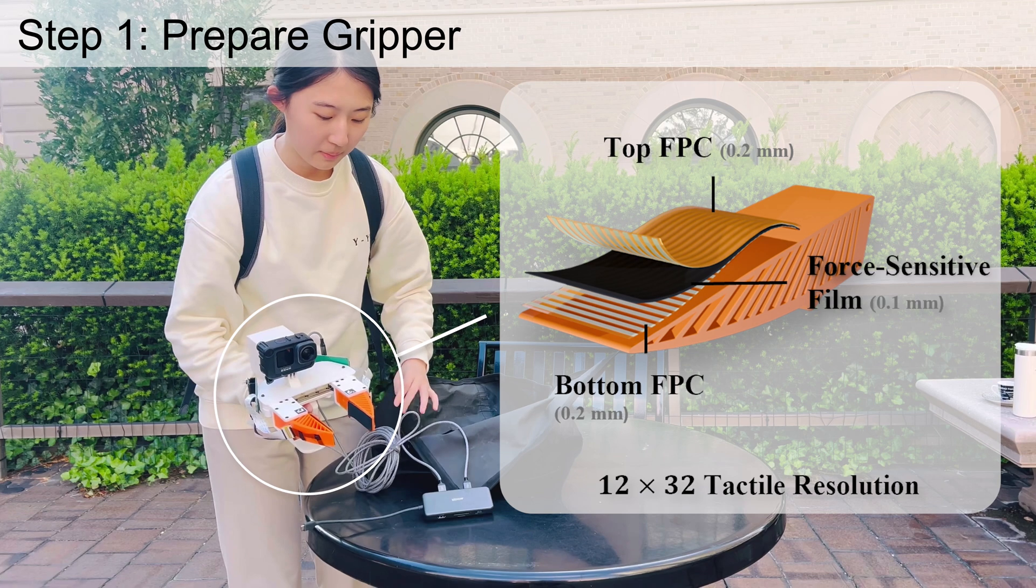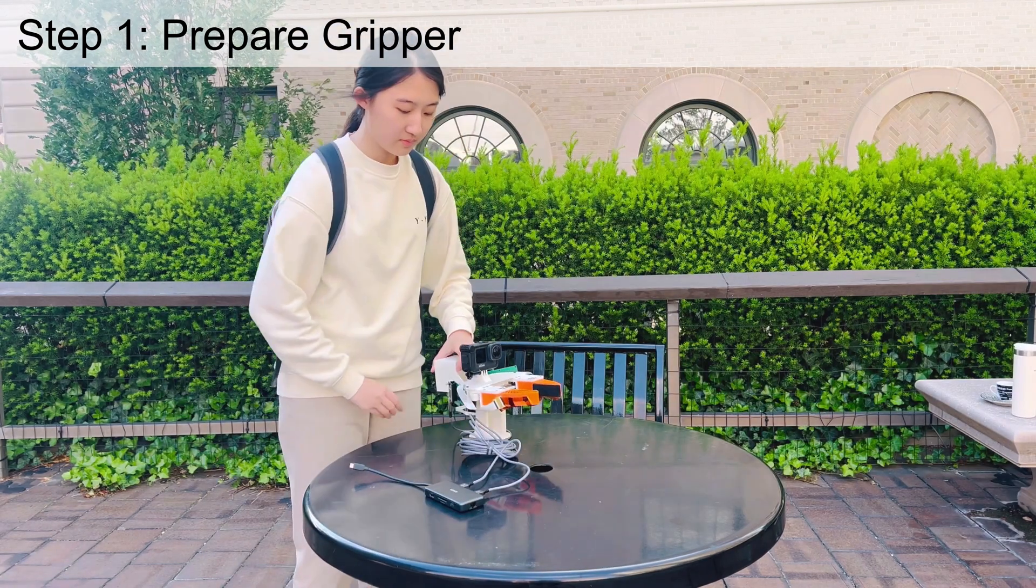A piezo-resistive sensing film is sandwiched between two sets of horizontally aligned conductive yarns acting as electrodes. Each pad offers dense 12 by 32 tactile resolution, capturing detailed contact information.